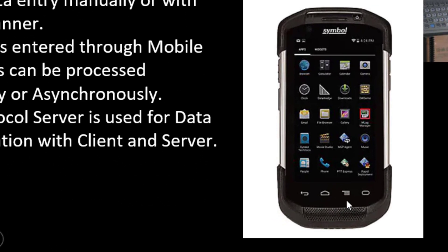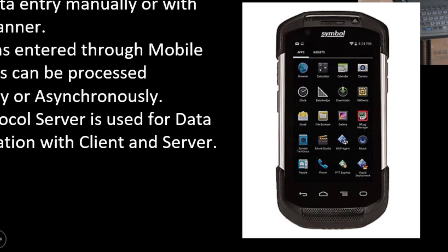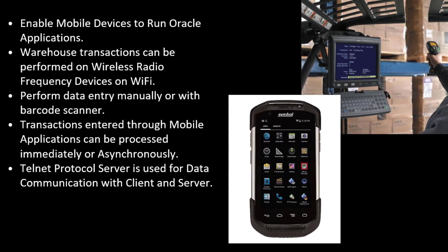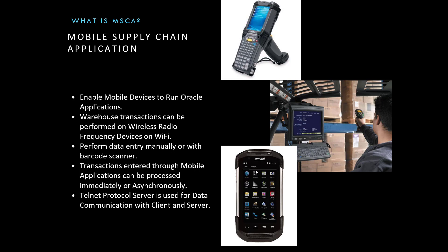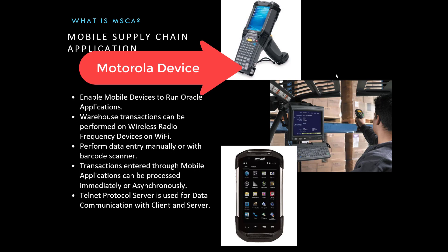There is another form of device — I believe they are partnered with Zebra. These are Android-based devices, which are very convenient and easy to use. They have a long scanning range. The key difference is that this particular device can scan up to 30 to 40 feet, making it very useful in large warehouses with multiple racks, where workers don't need to reach directly to the racks to scan.